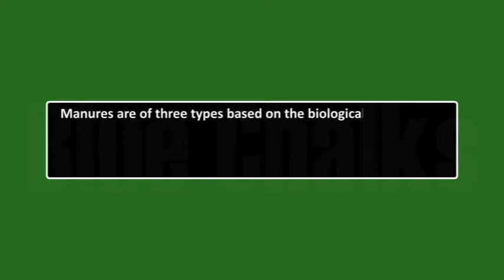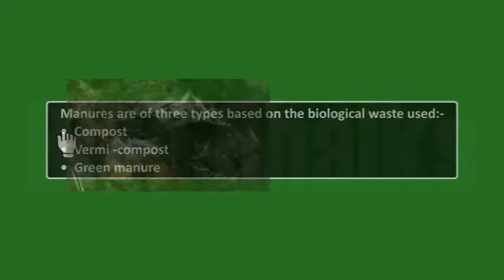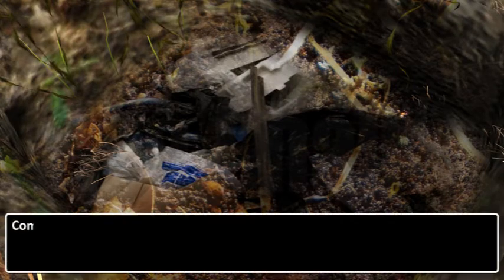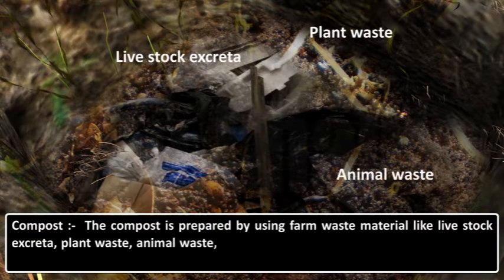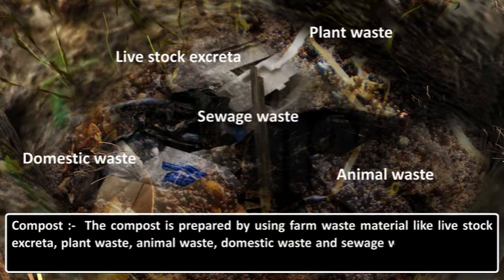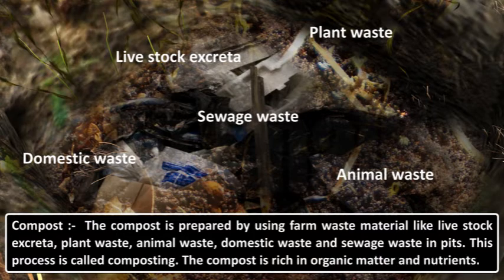Manures are of 3 types based on the biological waste used: compost, vermicompost, and green manure. Compost is prepared by using farm waste materials like livestock excreta, plant waste, animal waste, domestic waste, and sewage waste in pits. This process is called composting. The compost is rich in organic matter and nutrients.